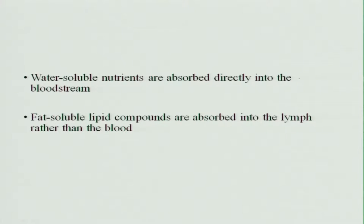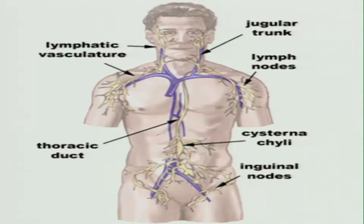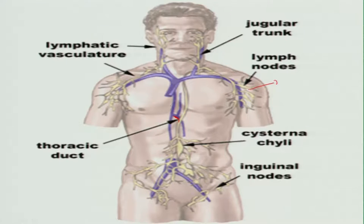Water-soluble nutrients are absorbed directly into the bloodstream, whereas fat-soluble compounds are absorbed into the lymph. The entire fat and fat-soluble nutrients are absorbed through the lymph tract and then enter into the blood — they do not enter the blood directly. The yellow part of the figure shows the lymphatic glands through which the fat is absorbed, and finally it joins the thoracic duct into the bloodstream.